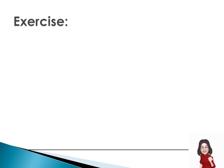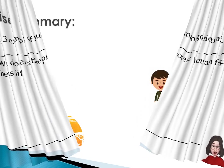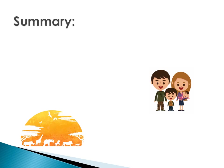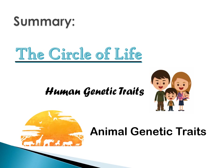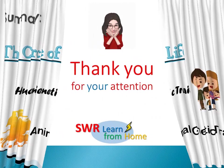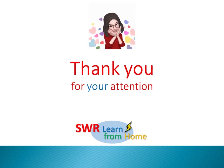So we are done with our first two topics, which is human genetic traits and animal genetic traits. Let us try to see if you have learned something out of the video. Please read the questions and answer them carefully. Good luck! For our summary, today you have learned about the circle of life, which contains the human genetic traits and the animal genetic traits. In the next meeting, we will be discussing all about plant genetic traits. Thanks for listening and hope to see you again in our next online session. Take care!